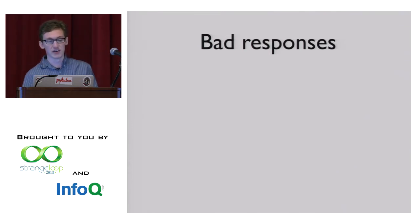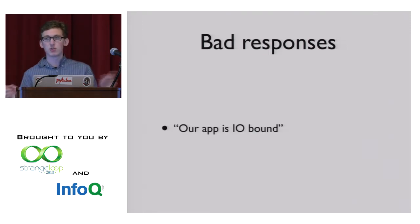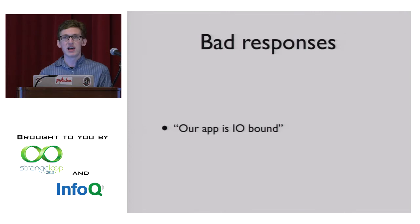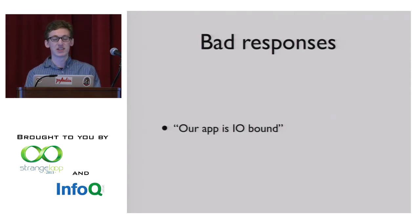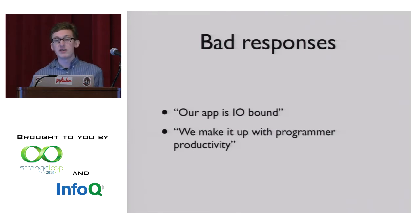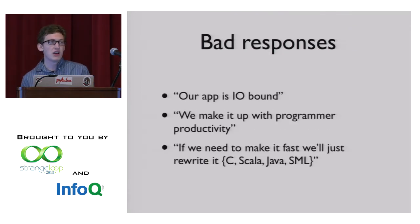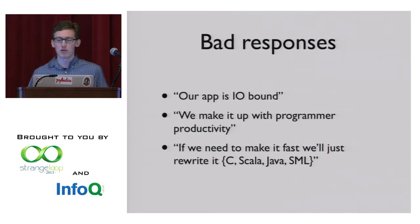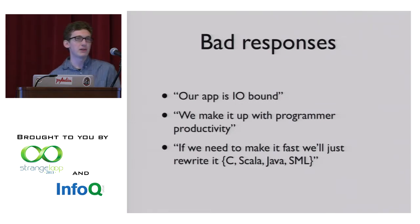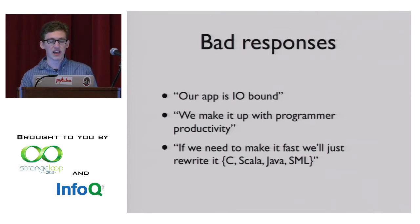Common answers include: our app is IO-bound, we write web apps, you don't have to care about CPU speed. There's an amazing correlation between people who say 'my app is IO-bound' and apps where you can trivially find 30% performance improvements by changing purely CPU-bound code. You also get 'we make it up with programmer productivity.' And finally, the most depressing one: later when we actually need it to be fast, we'll rewrite it in C or Scala or Java. This makes me sad because we figured out how to make these things fast and people seem hell-bent on abandoning what I think are a set of really good languages.